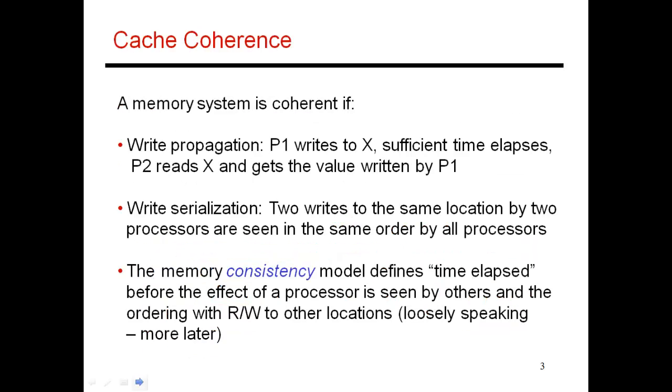To define cache coherence more formally, a system is said to be cache coherent if it fulfills these two conditions. The first is write propagation, which says that if processor P1 were to do a write into x, and if you let sufficient time elapse, then eventually everyone is going to see this new value of x. If P2 eventually does a read of x, it should get the latest value as written by P1. Write propagation just says that eventually every write will be propagated to everyone, but it does not make any guarantee on how much time needs to elapse before this write is seen by others.